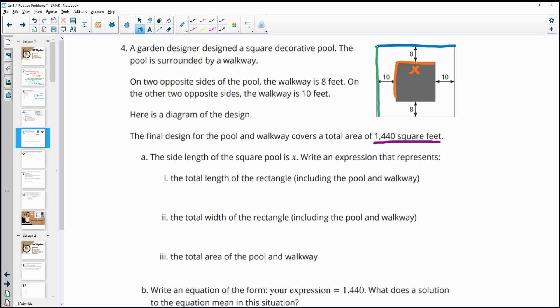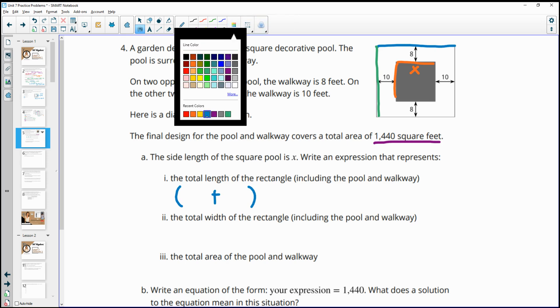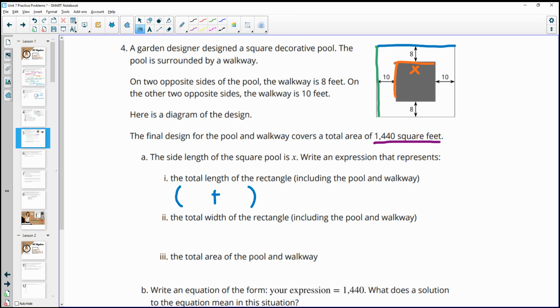And it doesn't matter, you could switch these around length and width, doesn't matter which one you do as which. So I'm just going to do the length as this blue one. And so in order to get the total length, I need to take the length of the pool, right? So I'm going to need the width of the pool here. And I'm going to need to have this part and this part. So it's going to be X and then plus two tens.